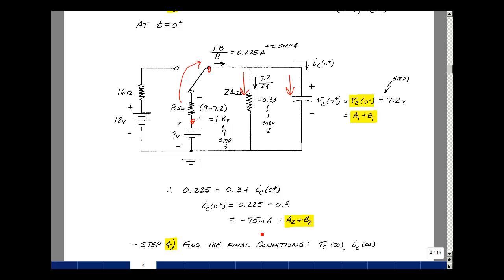That turns out to be minus 75 milliamps. And that's going to be our a2 plus b2 times e to the zero, and e to the zero is 1. Our fourth step is to get a second equation in our unknowns so we can solve for the a's and the b's in our circuit.